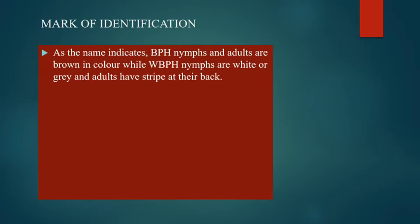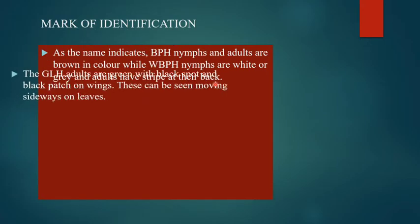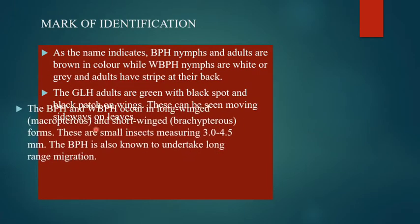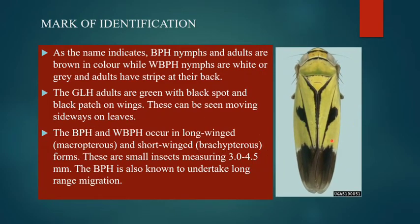As the name indicates, BPH nymphs and adults are brown in color, while WPH nymphs are white or gray and adults are striped black and yellow; adults are green with black spots and patches on the wings. BPH and WPH occur in long-winged and short-winged forms. These are small insects measuring 3 to 4.5 mm, and BPH is also known to undertake long-range migration.